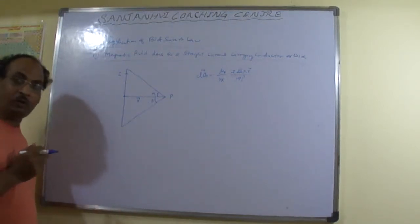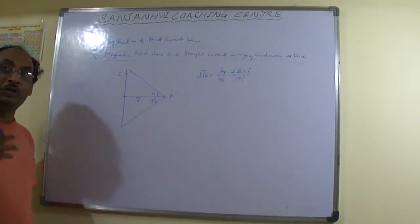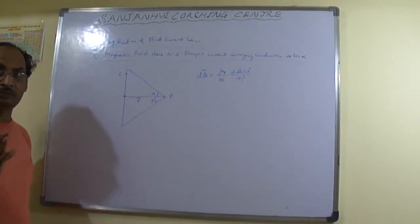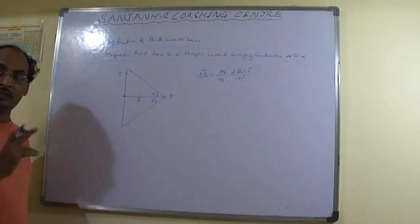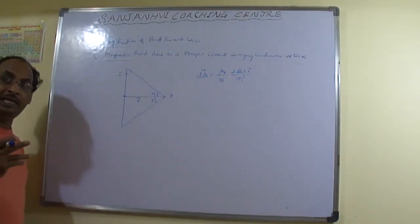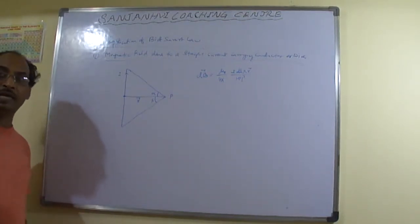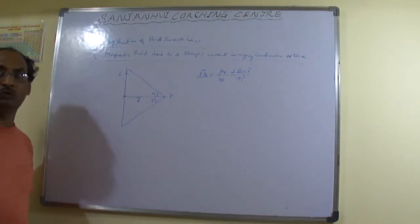Magnetic field also follows the principle of superposition, just as electric field does. Both Coulomb's law and Biot-Savart law follow the superposition principle — that is one similarity between electric and magnetic fields.